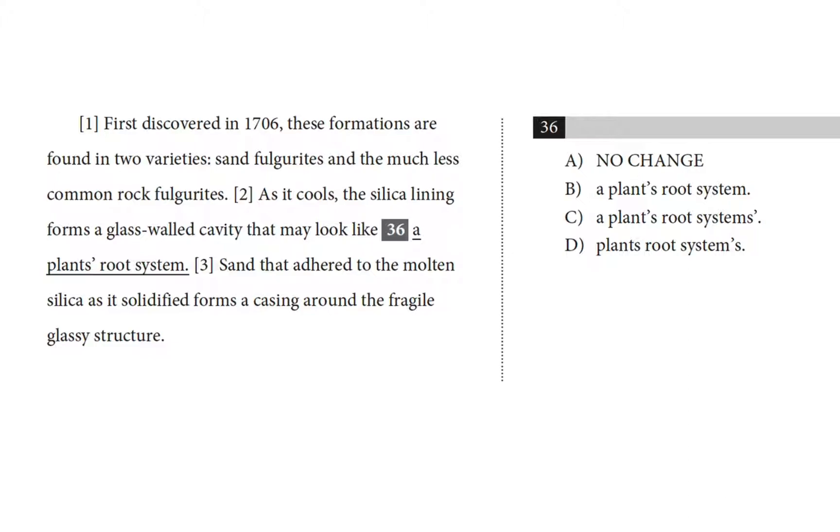So choice A is no change, and we've got an apostrophe after the S. Choice B puts the apostrophe after the T in plants. Choice C has two apostrophes, one after the T in plants and the other after the S in systems, and choice D has an apostrophe after the M in systems.